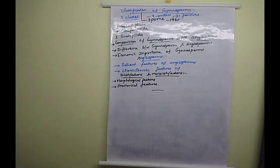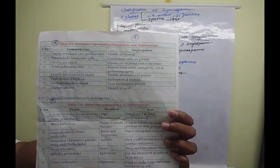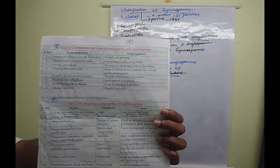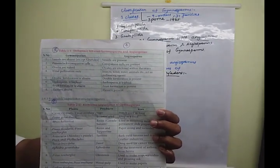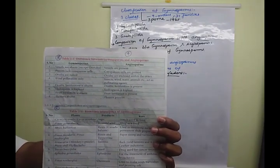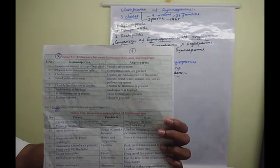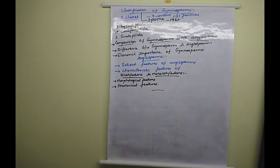Further differences: flowers are present in angiosperms but absent in gymnosperms. Fruit formation is present in angiosperms but absent in gymnosperms, since the ovules are not enclosed. These are the major differences between gymnosperm and angiosperm plants.